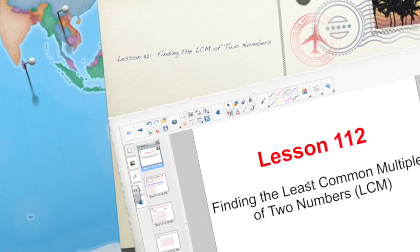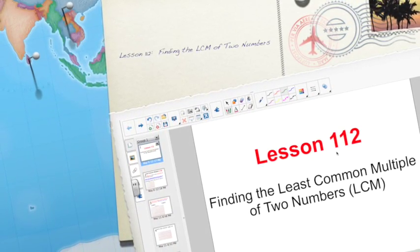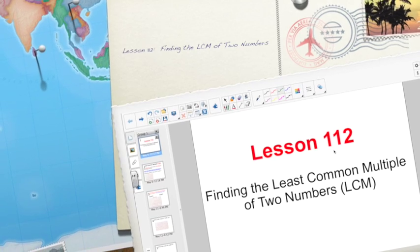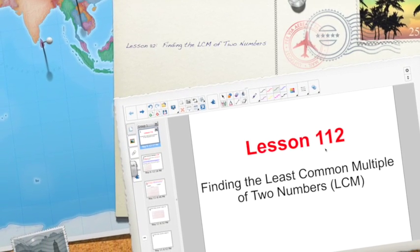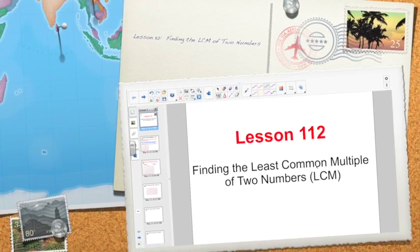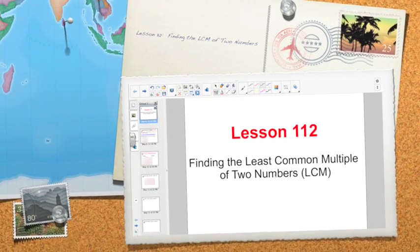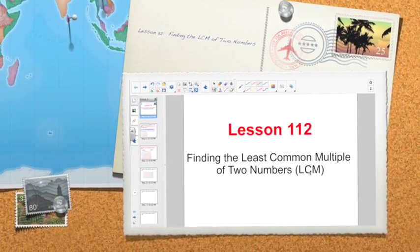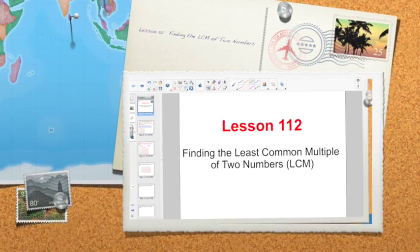Good morning, everybody. Welcome to Math Lesson 112, the first step to a pretty important concept in fifth grade math. We are talking about finding the least common multiple of two numbers, sometimes called the LCM.